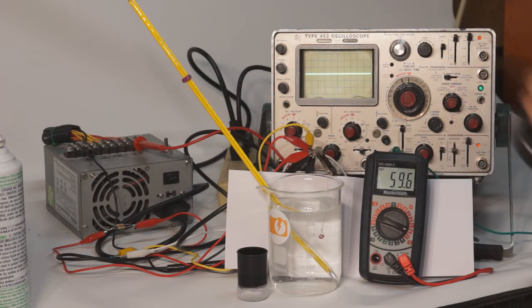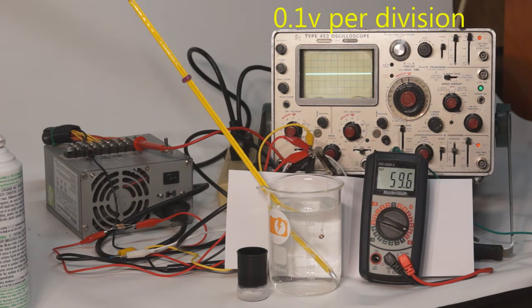To start, I have the coil sitting in some tap water which is at about 22 degrees Celsius. Here we can see that the current is 59.6 milliamps and the voltage is about 0.3 volts.